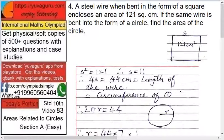Next. A steel wire when bent in form of a square encloses an area 121 square centimeter. If the same...